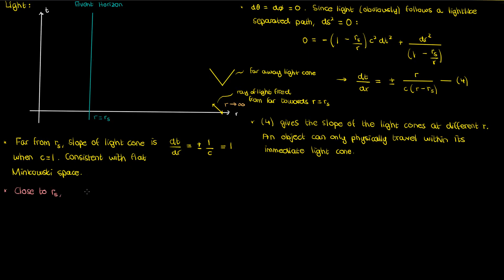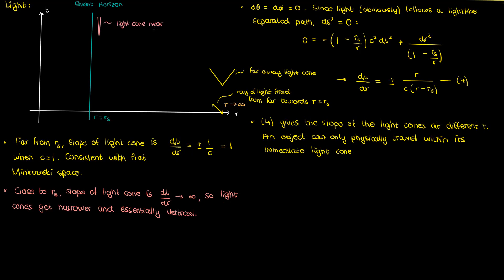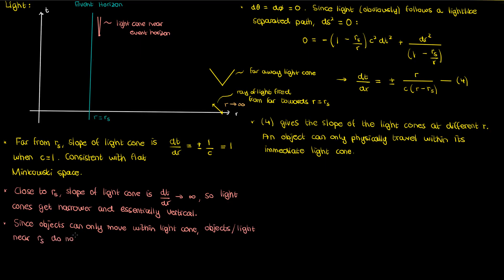However, if we look at light cones closer to the event horizon, then dt by dr now approaches infinity. So the light cones become narrower and narrower, with the lines virtually becoming vertical as we approach the event horizon. This implies that because mass-containing objects can only travel within their light cone, those objects are restricted to this really narrow region. In fact, when we're almost touching the event horizon, those mass-containing objects and even light hardly move. From this point of view, light never actually approaches the event horizon because it freezes by the time it gets really close.